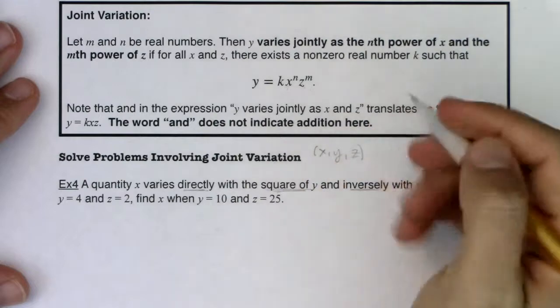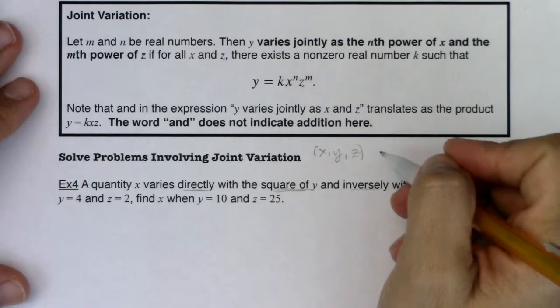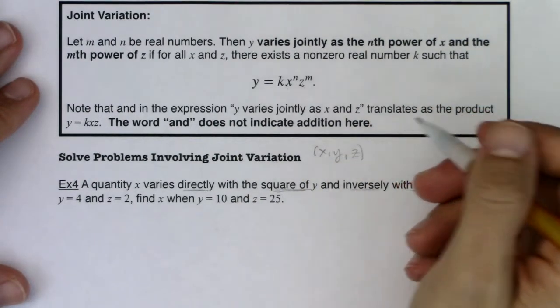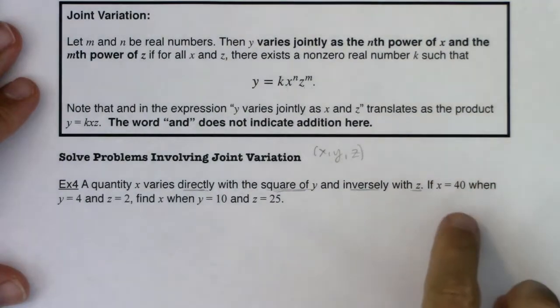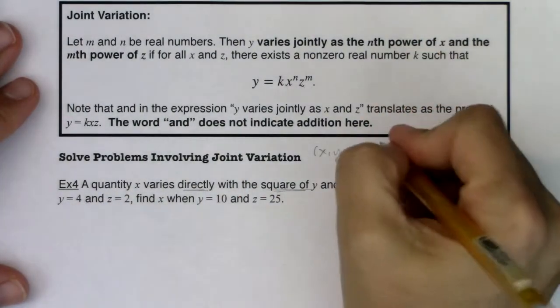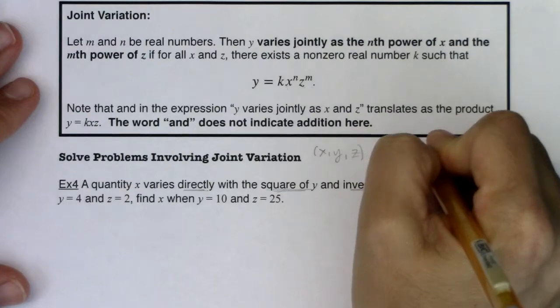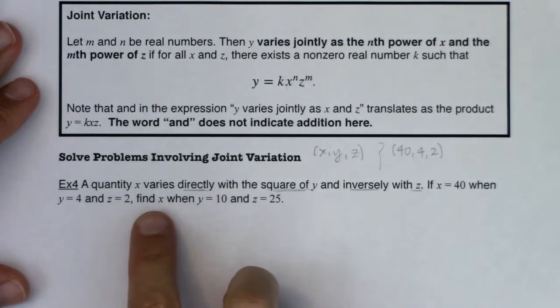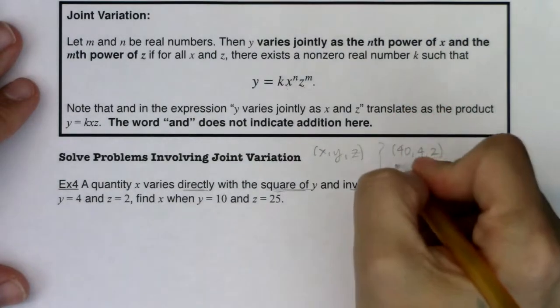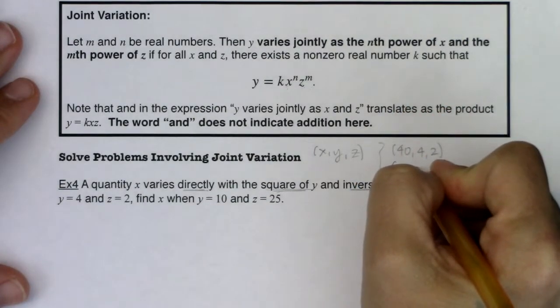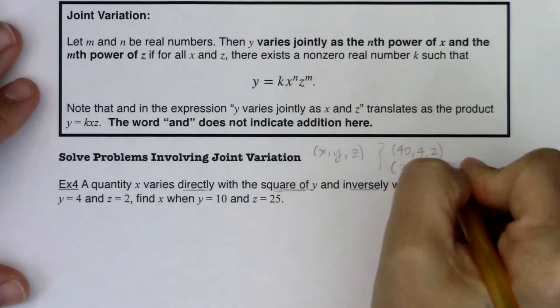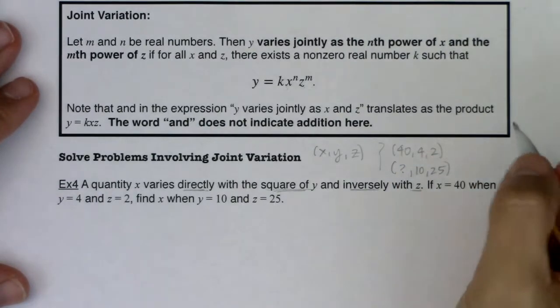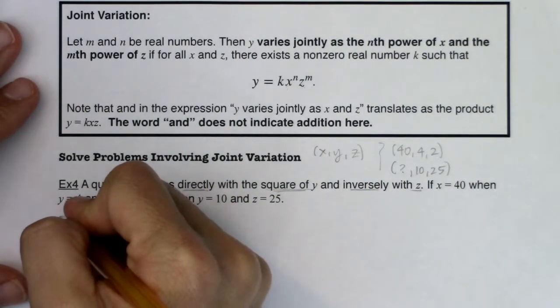So we'll be looking for ordered triples in this problem as opposed to ordered pairs. And I can see a triple right here. I see 40, 4, and 2. So I have one ordered triple, and then I have an incomplete ordered triple. I don't know X, Y is 10, and Z is 25. So I'll put a question mark, 10 and 25. Alright, so let's go ahead and try and do this in a step-by-step process.